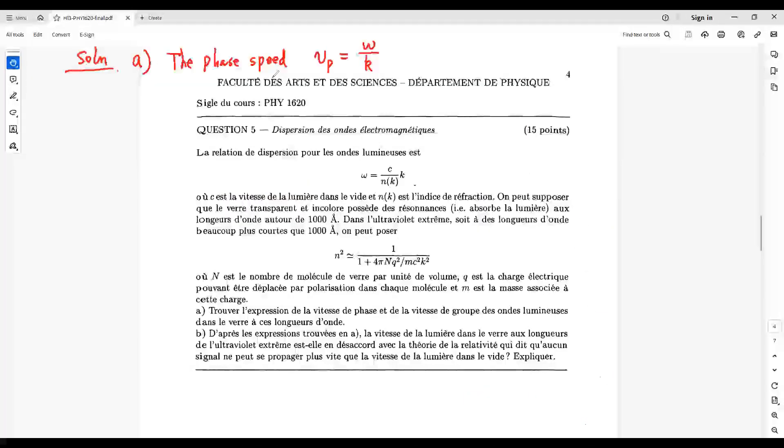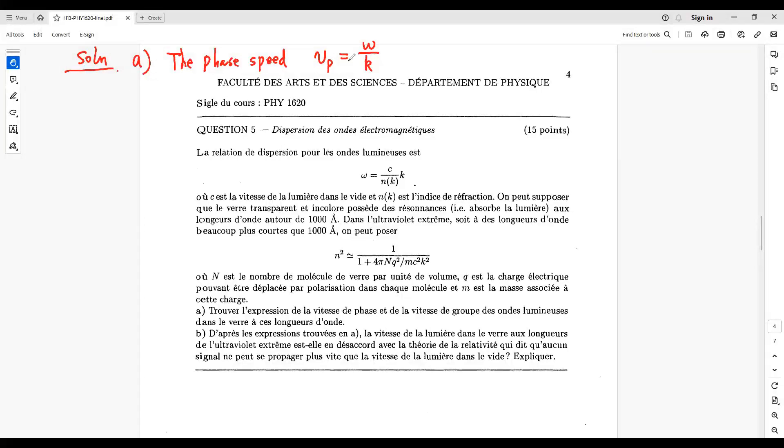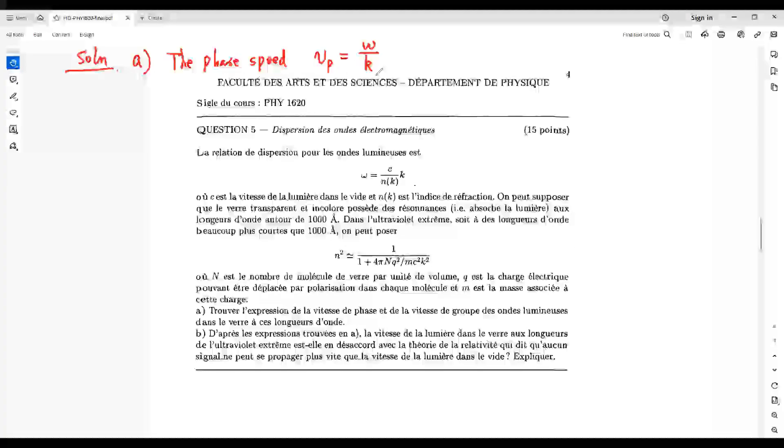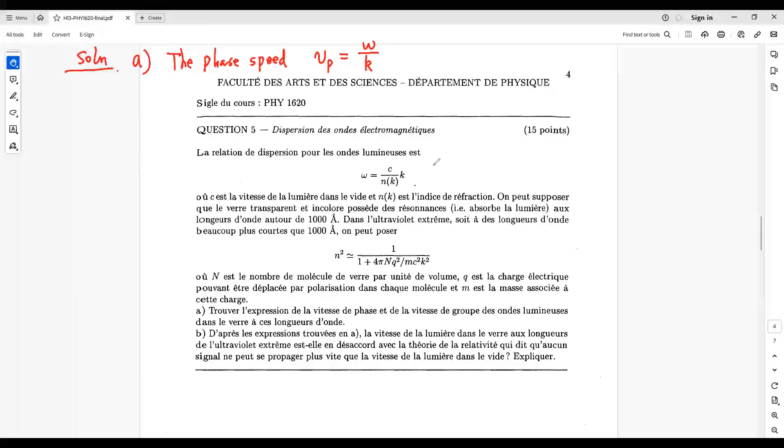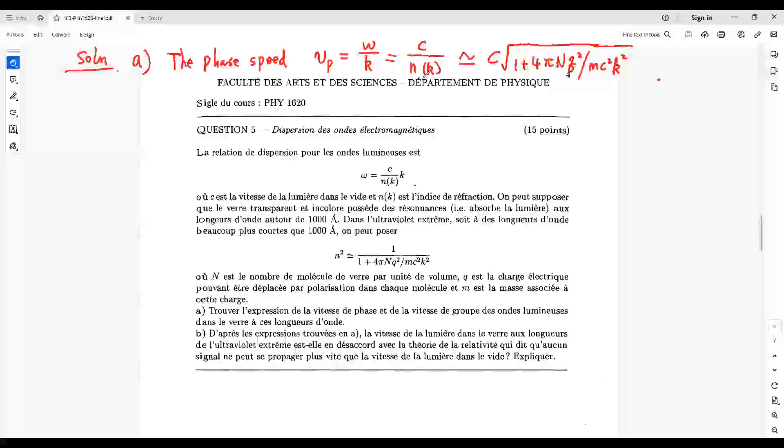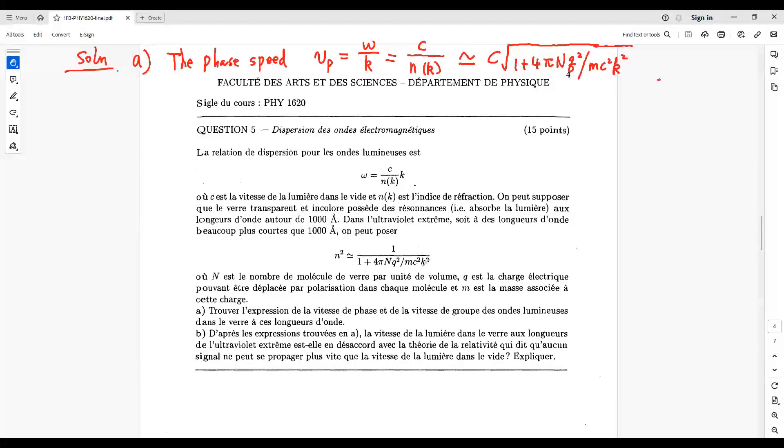Question A. The phase speed, Vp equals omega over k. From this relation, we get Vp equals C over N. And from this one, we get Vp is along this one.